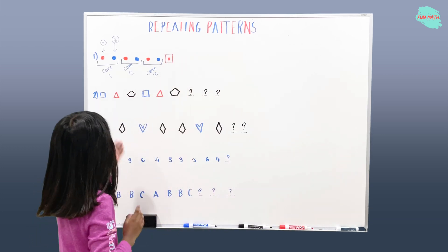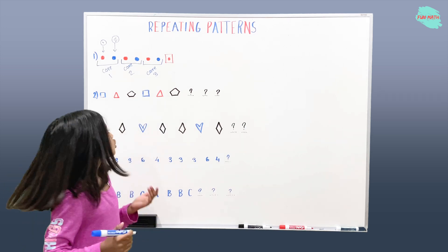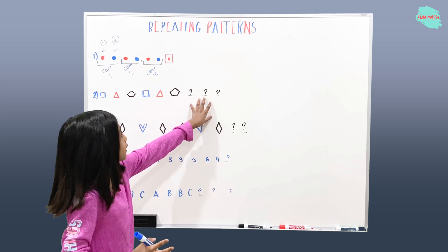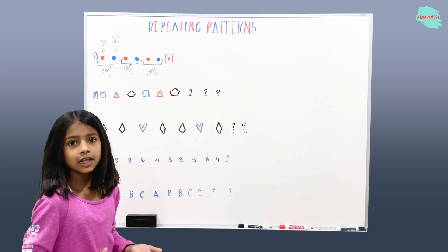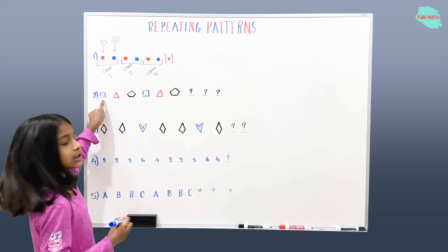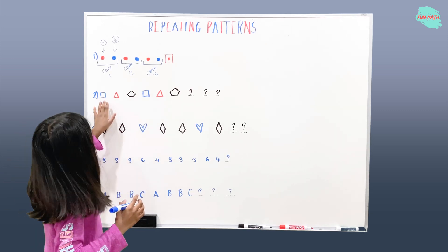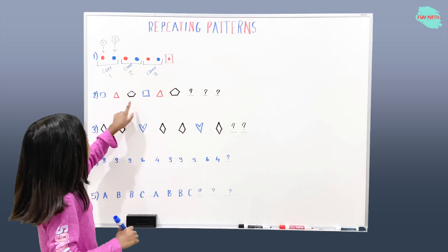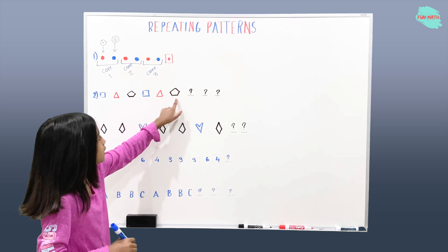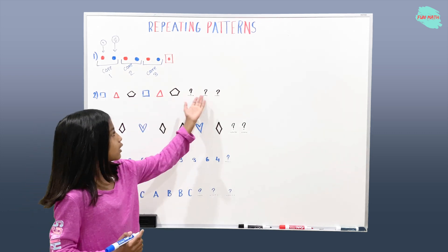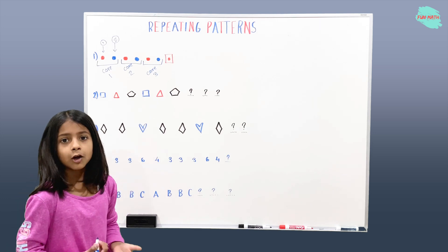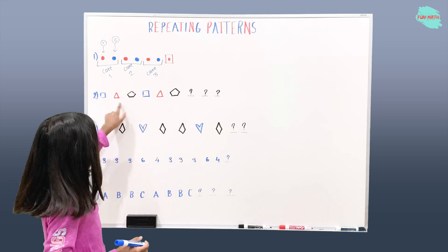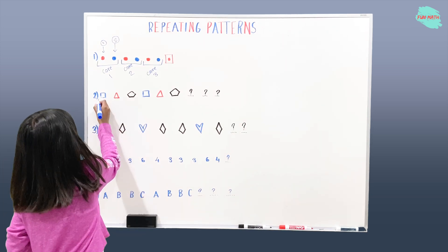Now let's move on to example two. We have to find the core and the three shapes that are missing. So the first shape is square, triangle, pentagon, square, triangle, pentagon — and then you have to find the other shapes. The core is square, triangle, and pentagon.